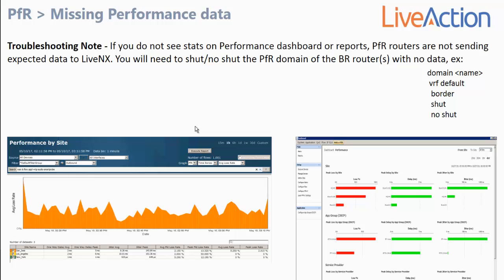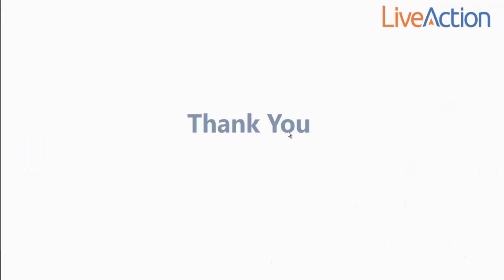If you see data missing from the PFR performance reports or from the PFR performance dashboard view, that means the PFR border routers are not sending the appropriate data to LiveNX. Doing a shut/no-shut on the PFR border process at each border router that's not sending its applicable data will kick-start that router to start sending all of the PFR log data that LiveNX can take advantage of. This concludes part one of our PFR practical reporting video — please look for part two, where we will dive into the LiveNX client and show practical examples of this material.